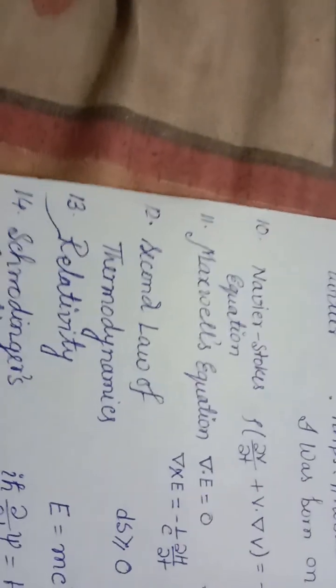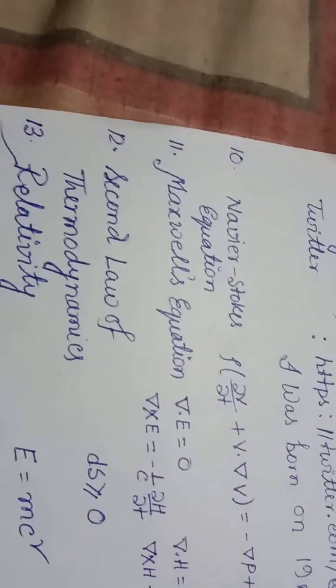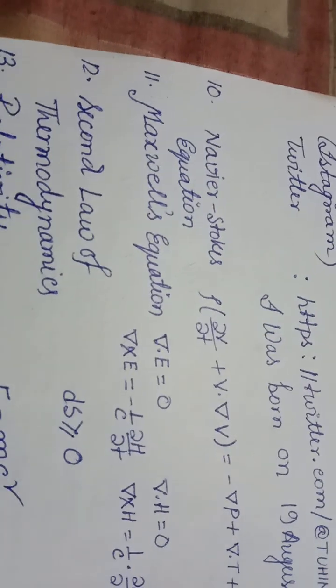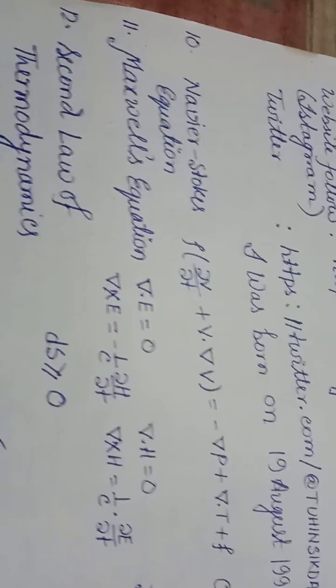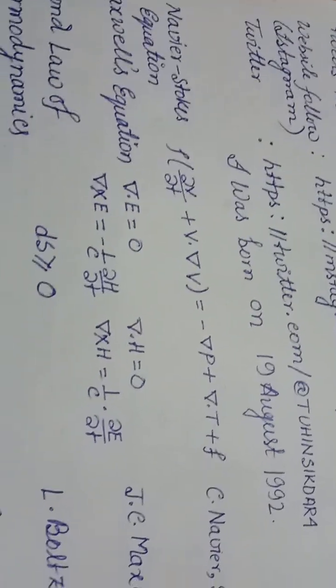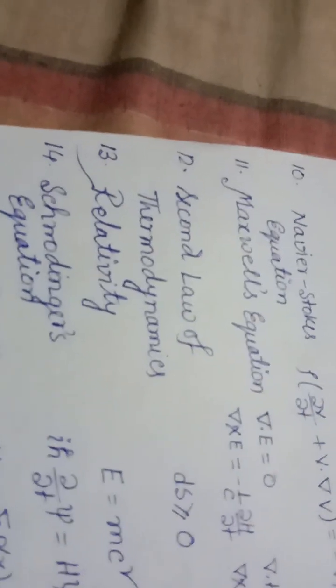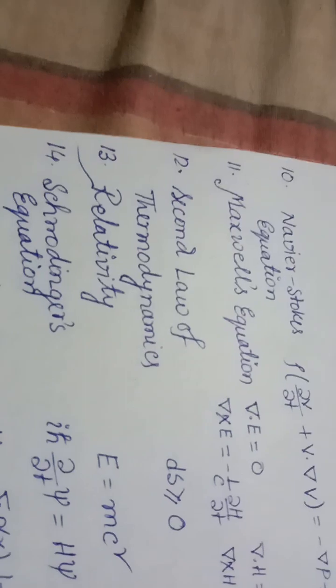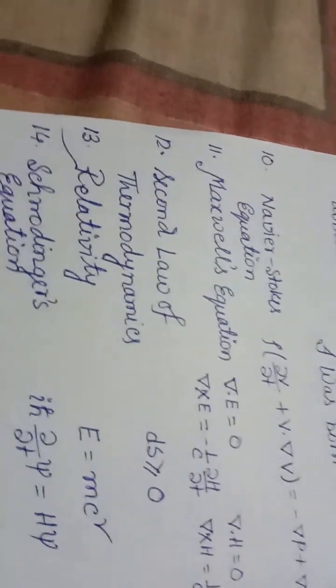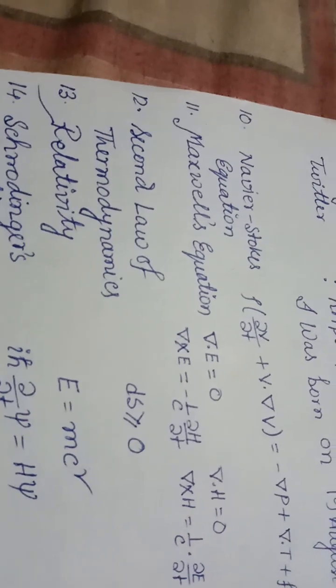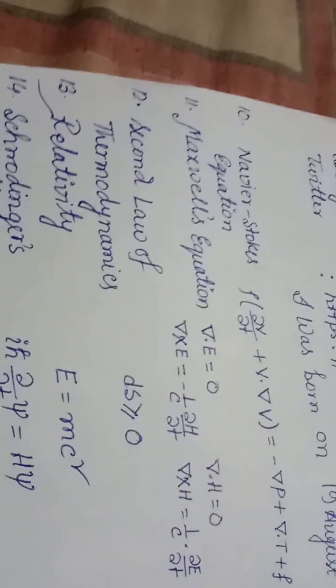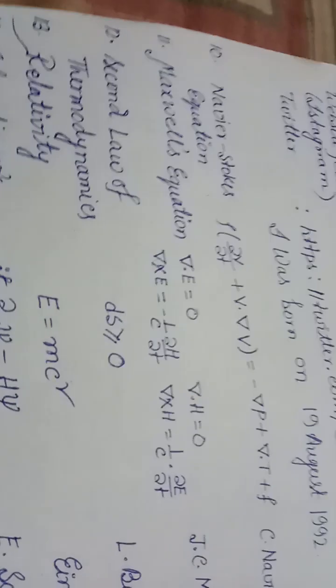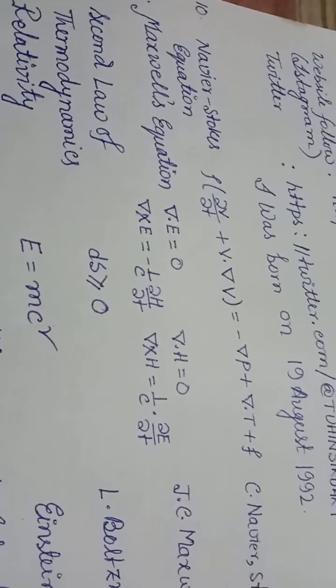Formula number 10, Navier-Stokes equation: ρ(∂V/∂t + V·∇V) = -∇P + ∇T + f. C. Navier-Stokes, 1845. Formula number 11, Maxwell's equations: ∇·E = 0, ∇×E = -(1/c)∂H/∂t, ∇·H = 0, ∇×H = (1/c)∂E/∂t. J.C. Maxwell, 1865.